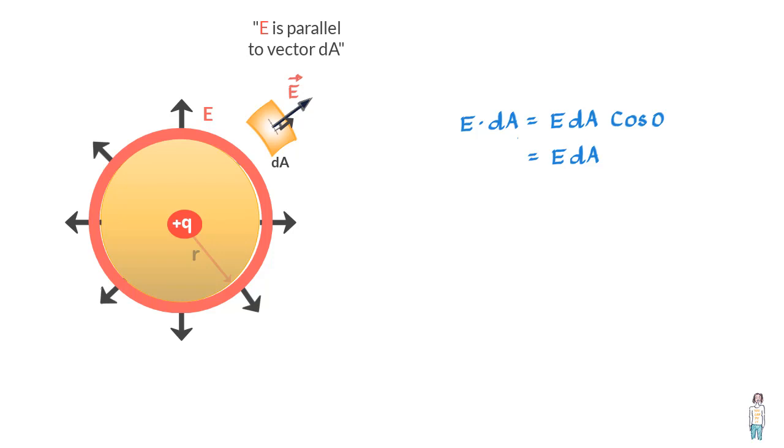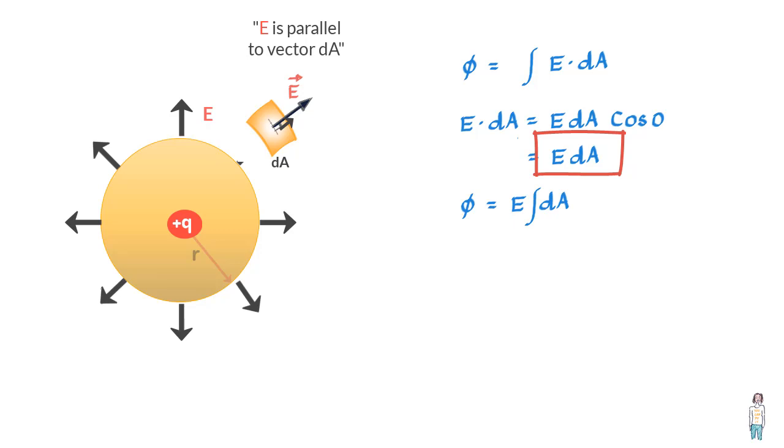Now this makes things simpler for us when we use this equation for finding the flux, because we can see when we put E dot dA as E dA, we can take E out on the right-hand side since E is constant at radius R, and what we are left with is E times integral of dA.